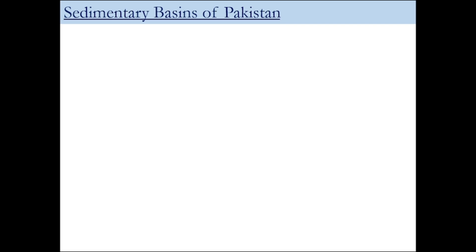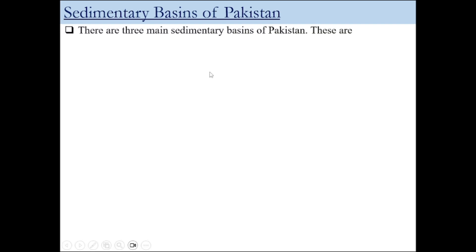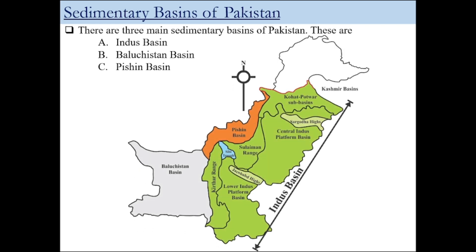Hello and welcome to my YouTube channel GioHop — don't forget to subscribe. Today we will talk about the sedimentary basins of Pakistan. The three main sedimentary basins of Pakistan are: the Indus Basin, the Balochistan Basin, and the Pishin Basin. Looking at this map, we have the Balochistan Basin, the orange-colored Pishin Basin, the green-colored Indus Basin, and the northern areas as well.